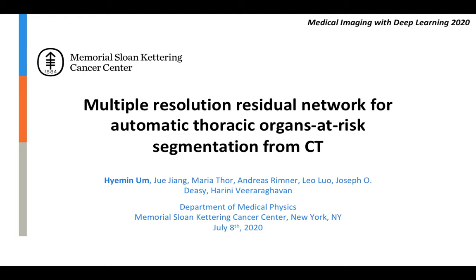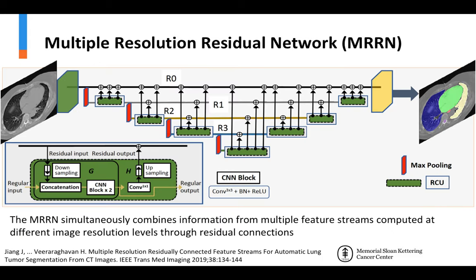This talk will explain the multi-organ segmentation method called Multiple Resolution Residual Network (MRRN) for the automatic segmentation of thoracic organs at risk from CT images. The MRRN, which has been published previously by our group, has the capacity to simultaneously combine information from multiple feature streams computed at various image resolution levels through residual connections.